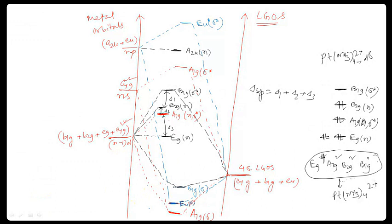So it is complete — no unpaired electron is there. So this is the MO diagram of a square planar complex. MO diagram of square planar complexes.